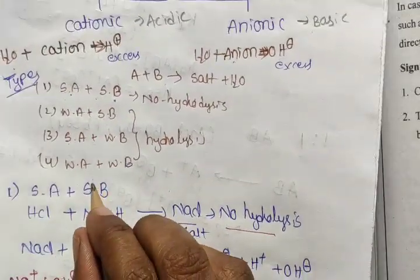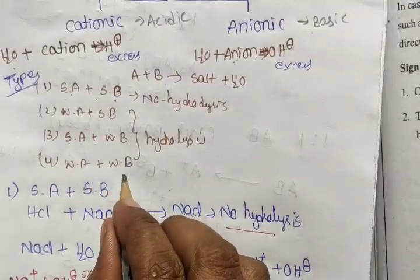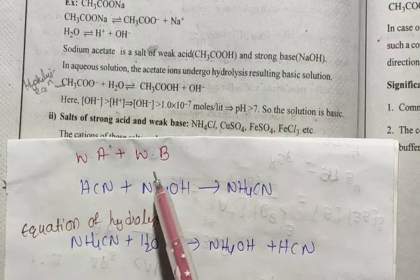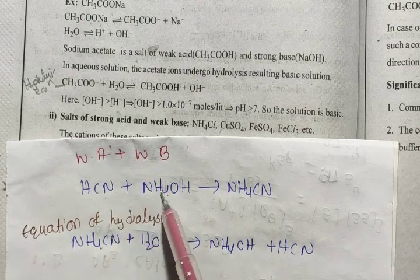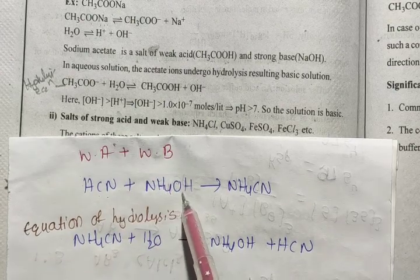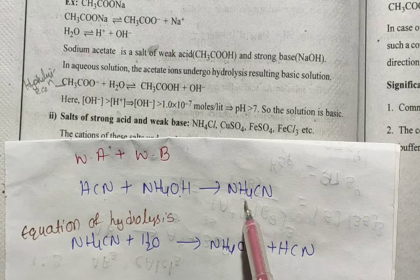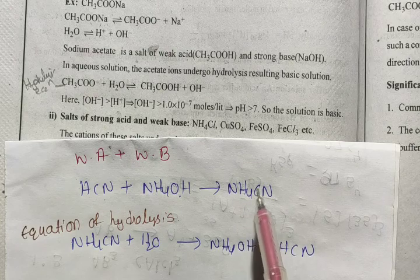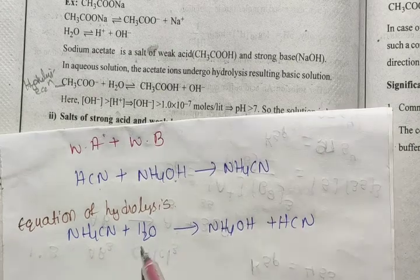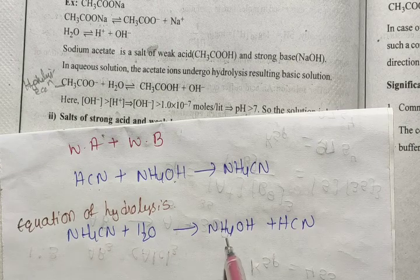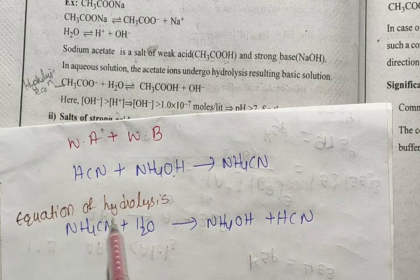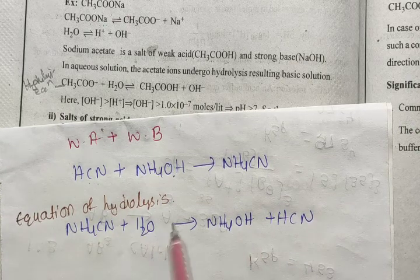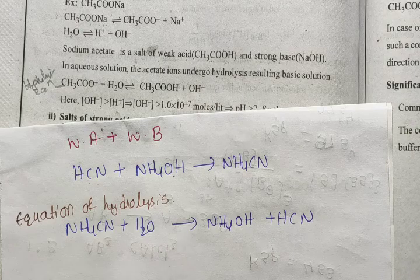Type 4: weak acid plus weak base. For example, weak acid is acetic acid (CH₃COOH) and weak base is NH₄OH. The salt formed reacts with water. Both the cation and anion undergo hydrolysis. This gives the equation of hydrolysis. So these are the main four types of hydrolysis.